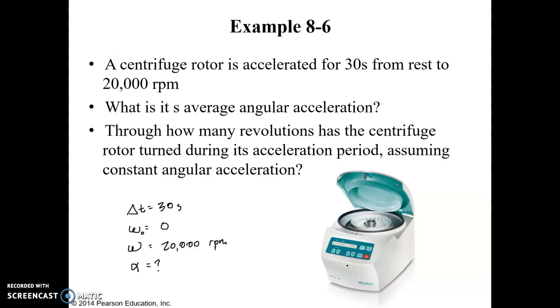Welcome back to our Chapter 8 Physics video series. When we left off in the last video, we were looking at Example 8-6 from the textbook, and this involves angular acceleration of a centrifuge. We're told that we're going to start from rest and power up the centrifuge, and it's going to work its way up to an angular velocity of 20,000 RPMs.